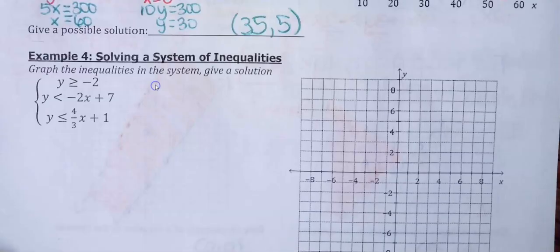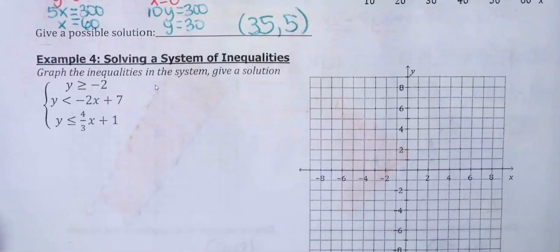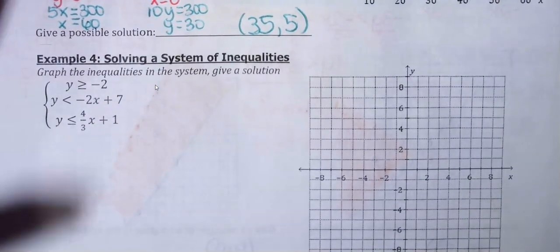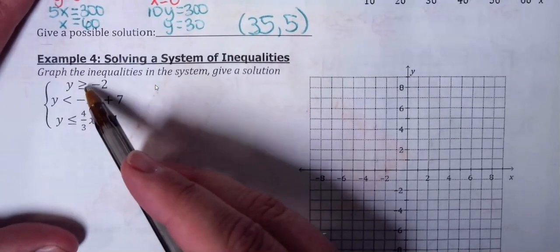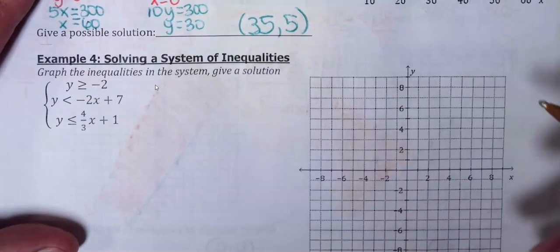Now, this is a system that has three inequalities, so that just means the shading needs to work for all three of them. So first one I'm going to graph, y is greater than or equal to negative 2.